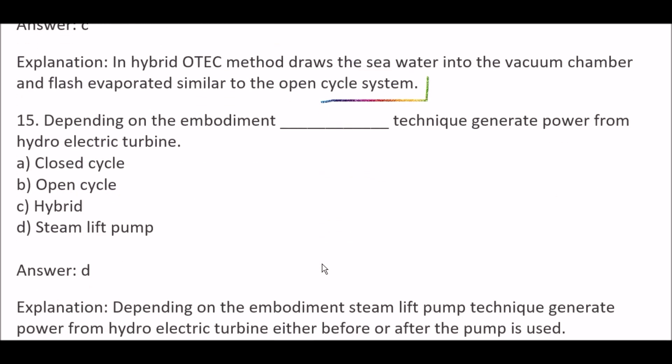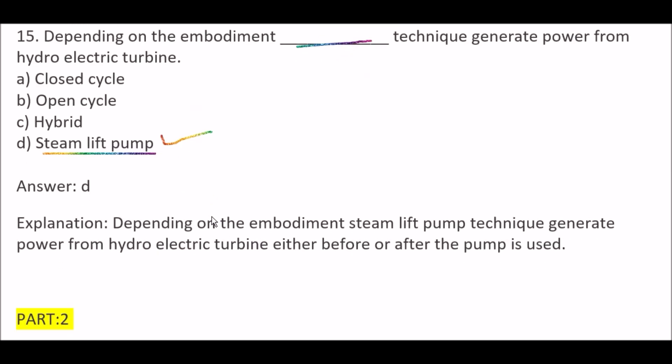Next question: Depending on the embodiment, blank techniques generate power from a hydroelectric turbine — Option A, closed cycle; Option B, open cycle; Option C, hybrid; Option D, steam lift pump. Right answer is Option D, steam lift pump. Depending on the embodiment, steam lift pump techniques generate power from a hydroelectric turbine, either before or after the pump is used.